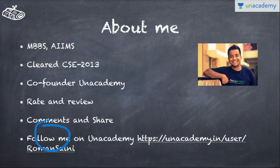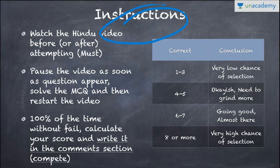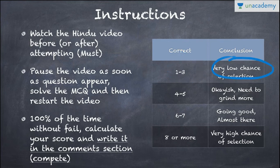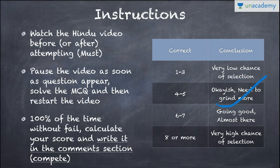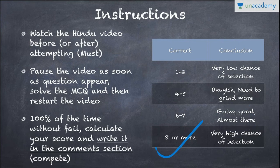Do rate this course five star, review it, write comments, and share it. In the comment section, write your exact score. If you get one to three correct, it's pure luck. Four to six means you're okay but need to grind more. Six to seven means you're going good. Eight or more means you have a very high chance of selection. Please pause the video when you see each question, think about it, mark it, then see the answer.